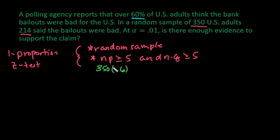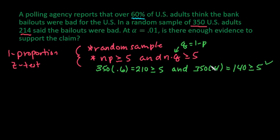So for this one, if I take and multiply this out, this gives me 210, which is definitely greater than or equal to 5. And Q, remember Q is found by doing 1 minus P. So in this case, it would be 0.4, which equals 140. And this is definitely also greater than or equal to 5. So these two conditions are both met.